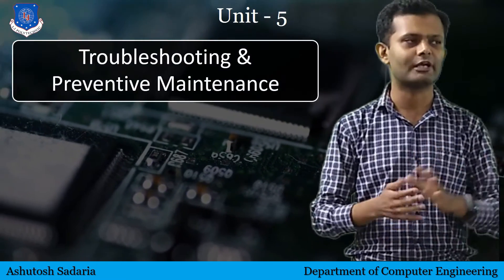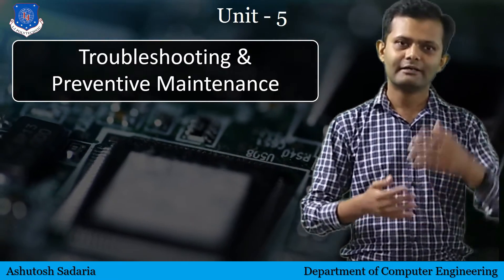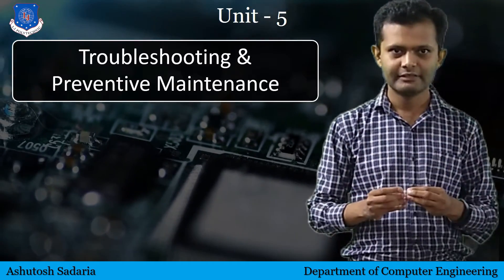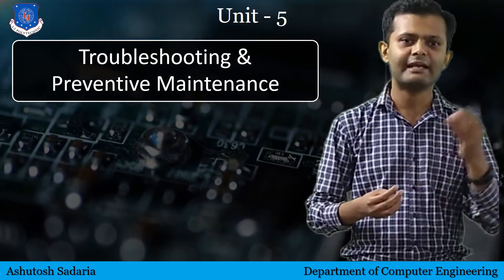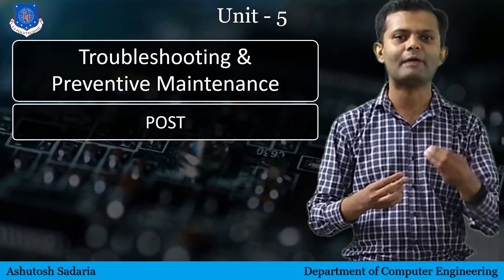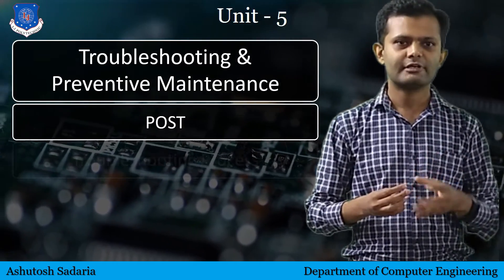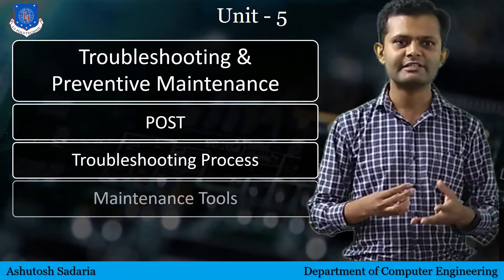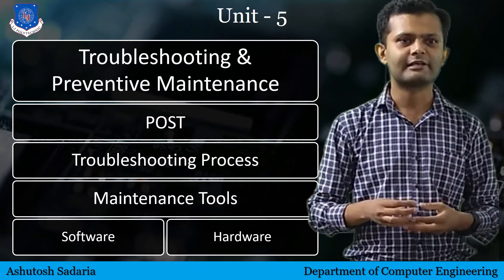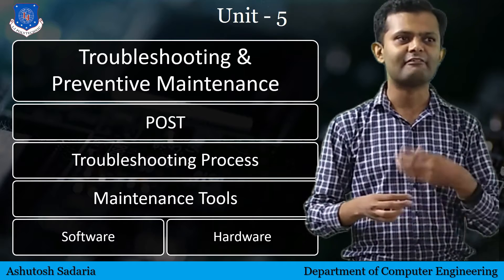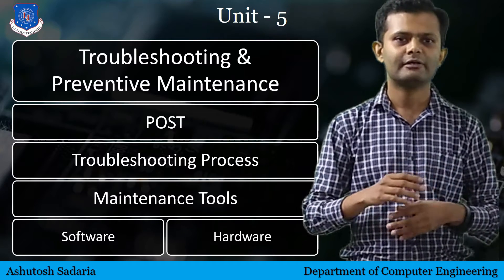And then in the fifth unit, we are going to learn about Troubleshooting and Preventive Maintenance. You can see that the first four units are basically an introduction to your computer parts, and in the fifth unit we are going to learn about how to maintain those parts and how to troubleshoot if any problem arises. In order to maintain and troubleshoot, we are going to learn about POST, troubleshooting procedures, and maintenance tools like Software Maintenance Tools — such as Disk Cleanup and Antivirus Scan — and Hardware Maintenance Tools like Multimeter and other digital tools to maintain our hardware.